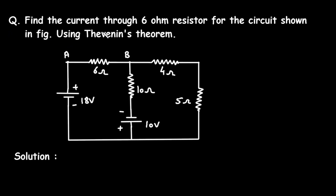Question: Find the current through the 6 Ohm resistor for the circuit shown in the figure using Thevenin's Theorem. Here, for this circuit, we have to find the value of current through this 6 Ohm resistor by using Thevenin's Theorem.